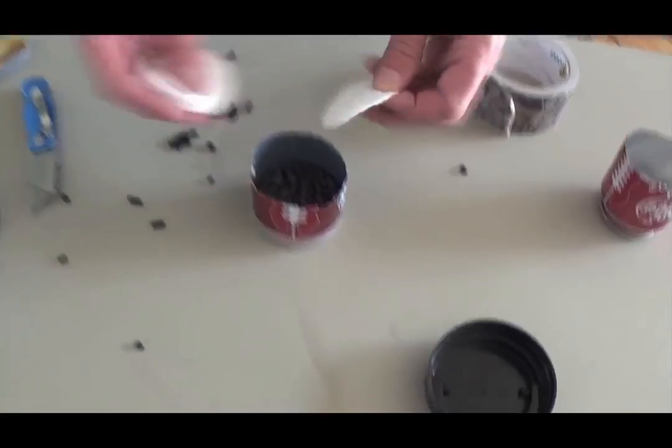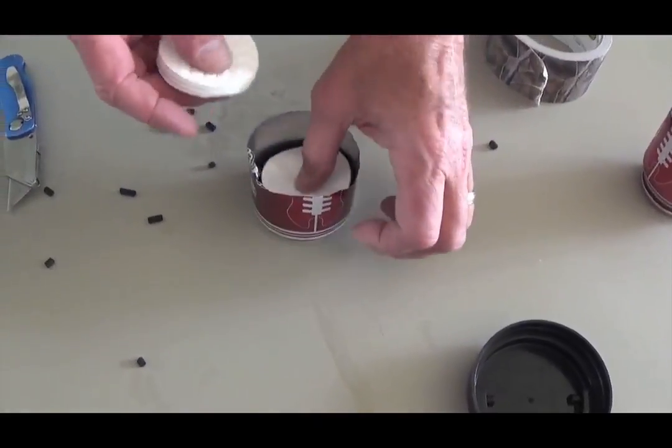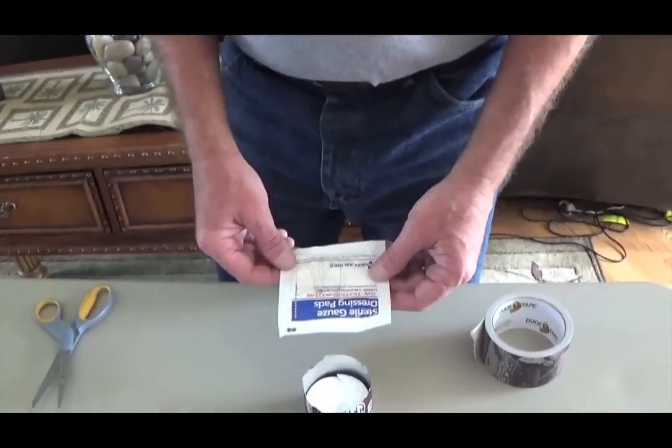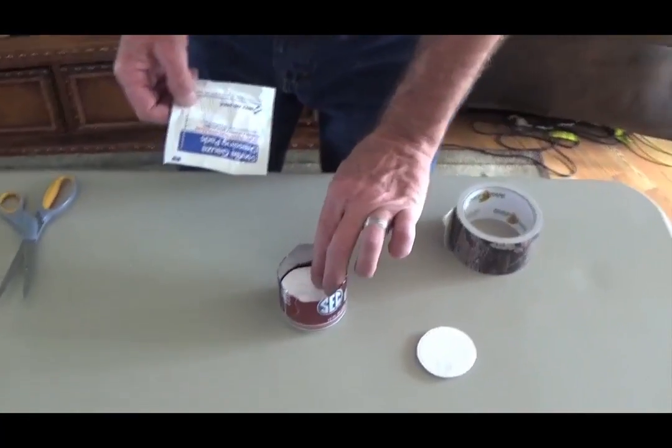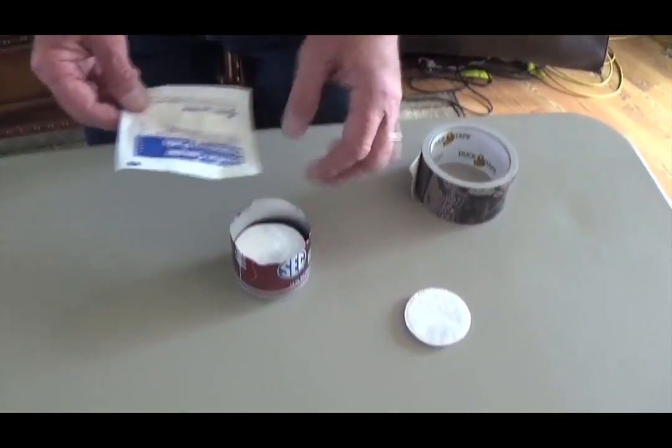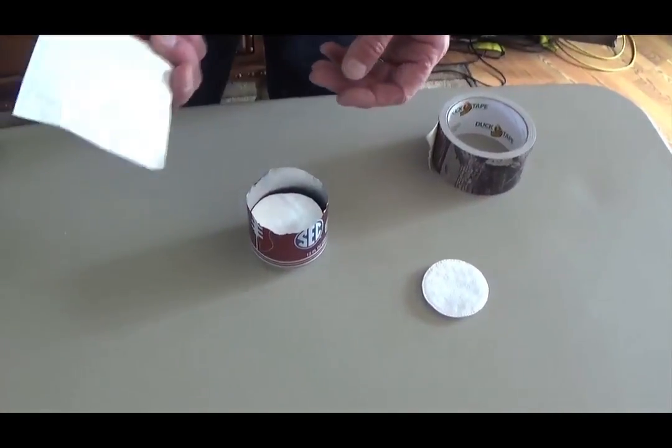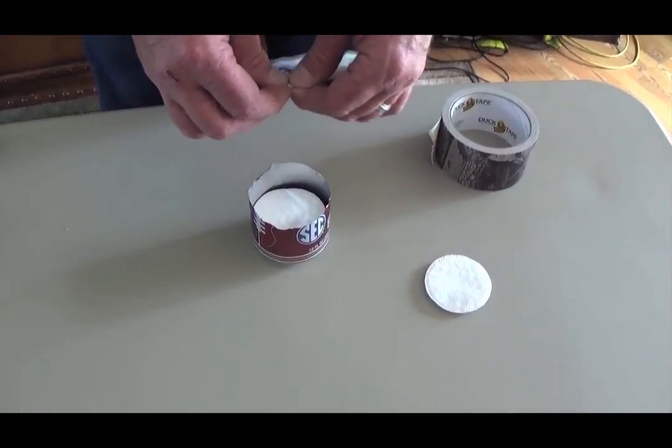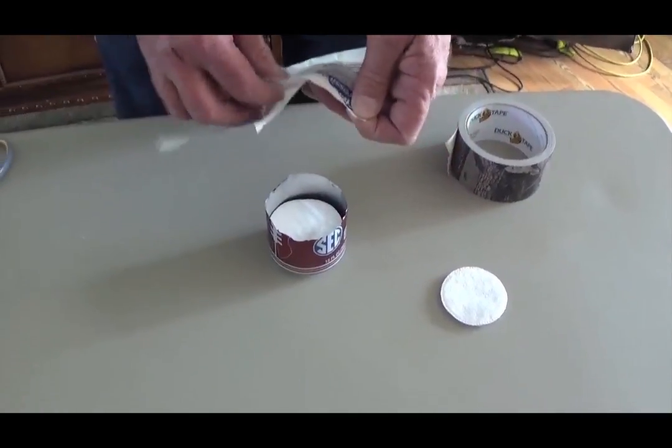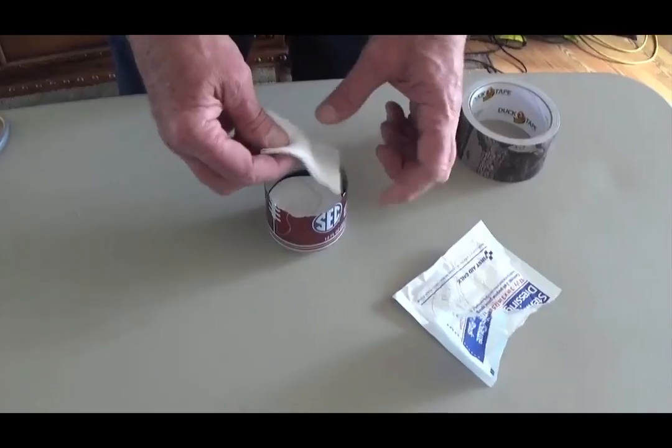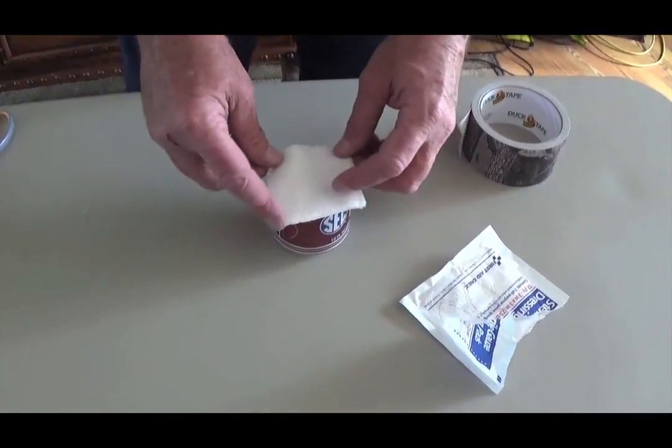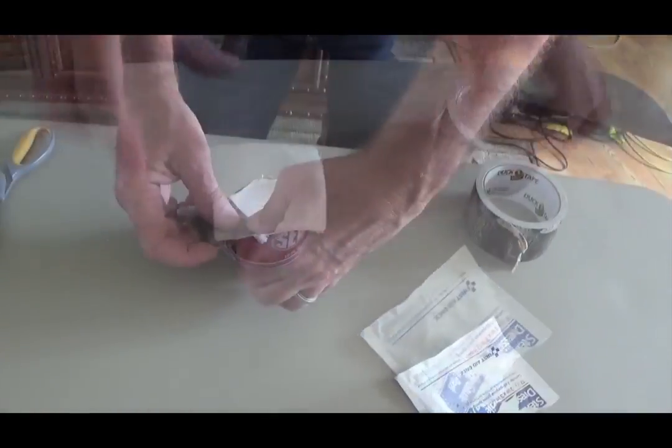Then we put another one of these on. Like so. Okay. Our rounds are a little bit small for what we need for the top. So we went in one of our first aid kits and we found a nice gauze. And we're going to tape that on there like that. All the way around.